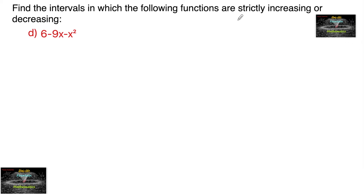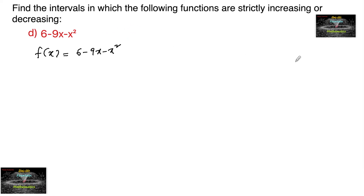Find the intervals in which the following functions are strictly increasing or decreasing. The given function is 6 minus 9x minus x squared. So let us consider f(x) = 6 - 9x - x². To check the interval in which the given function is increasing or decreasing, we will go with the usual method: f'(x) = 0, whereby our function will change its curve from either increasing or decreasing.